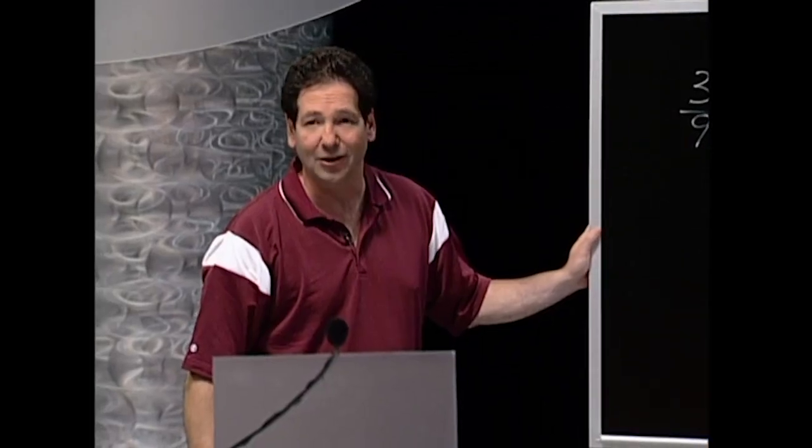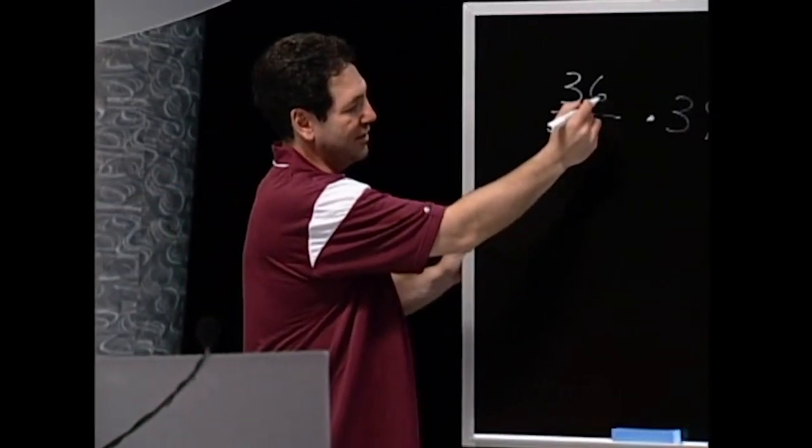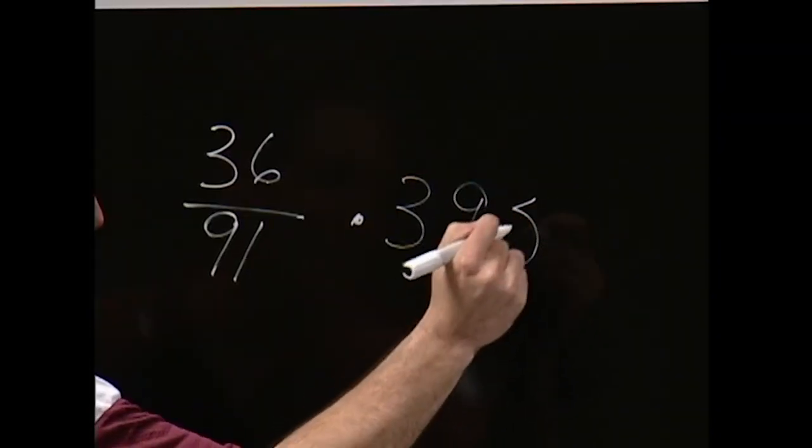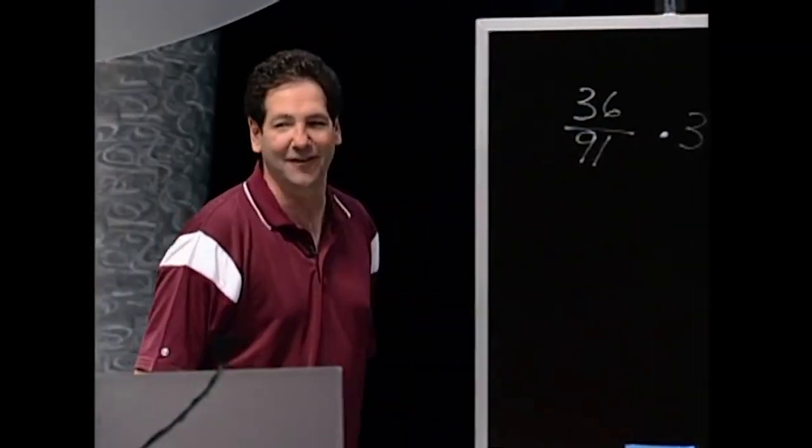To get the third digit of the answer, you take the ones digit of the numerator and subtract 1. 6 minus 1 is? 5. You guys are so cool. Okay, we've got 395. That's the first three.